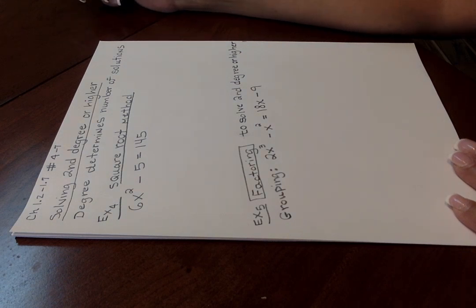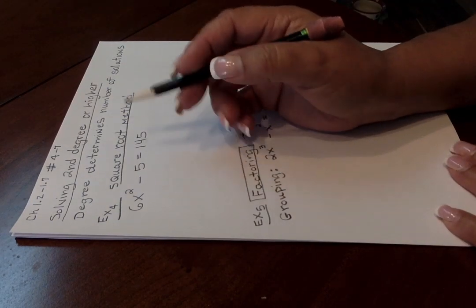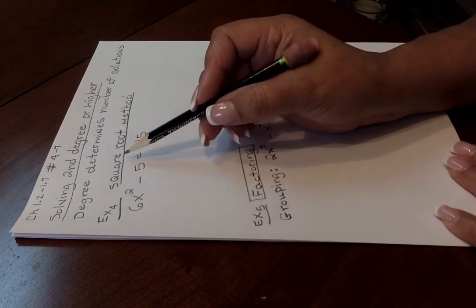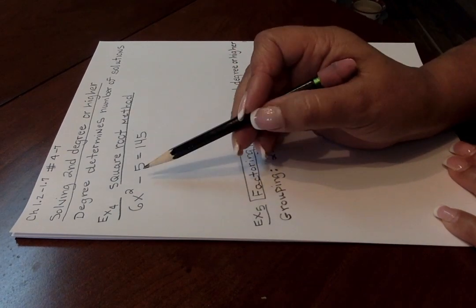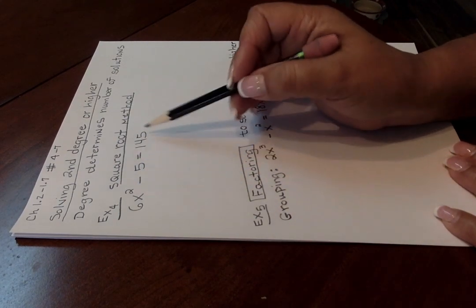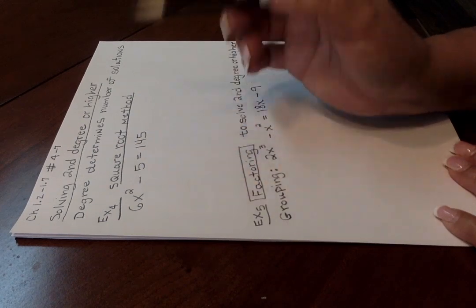Number 4 on that outline, I believe, is just like this one, where you're going to be using the square root method, which is particularly useful when the linear term is missing. See how there's no first degree term here, just a second degree and constants?